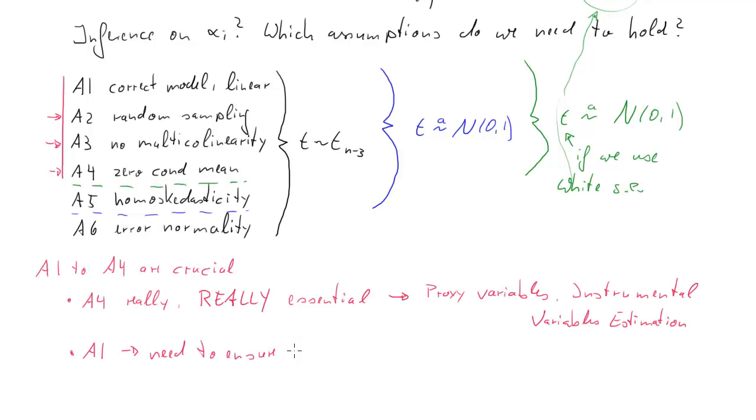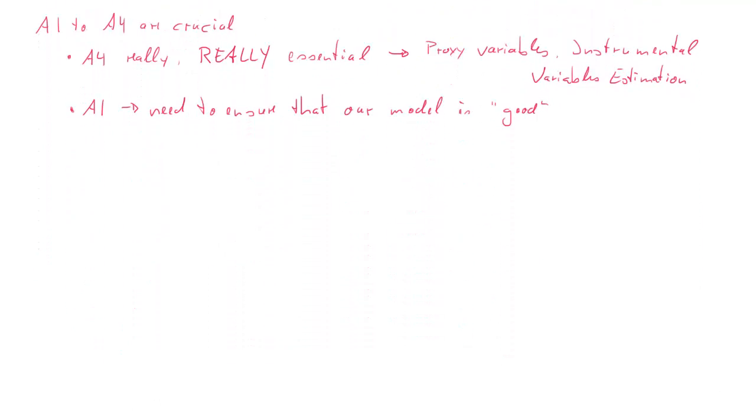Now A1 is equally crucial, and therefore we should really ensure that our model is a good model. What does that mean, a good model? Well, it's really a model where we consider all relevant variables, and that's really important.